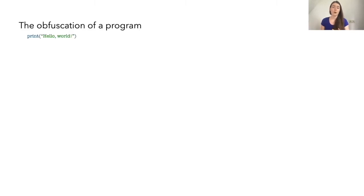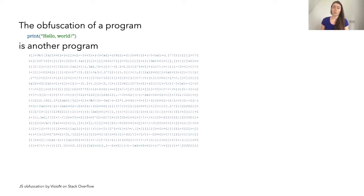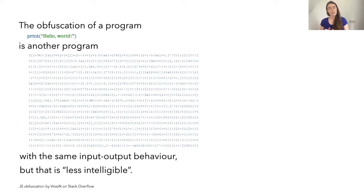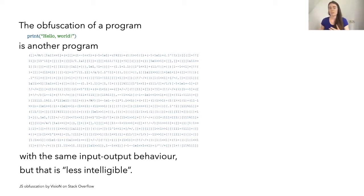So what is obfuscation? Informally, the obfuscation of a program — for example this simple canonical program that just prints the text "hello world" — is another program with the same input-output behavior but that is somehow less intelligible. This long string of symbols, letters, numbers: if you run it, it will do exactly the same thing as the short program above, namely print hello world, but it's very hard to tell what the specification of this program is just by looking at the code. A good obfuscation reveals nothing more than what you can learn from actually running it and observing its output.